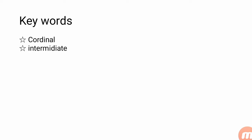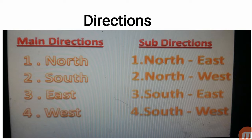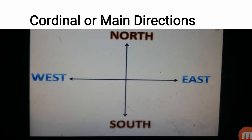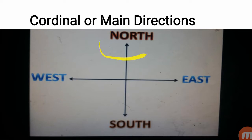The other type of direction is called intermediate direction. So how many directions are there? The main cardinal directions are North, East, South, and West.